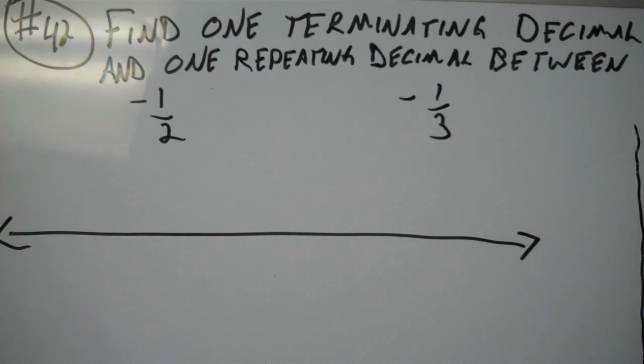I think the easiest way to go about doing this problem is to plot both of these numbers on a number line, and I'm going to convert them first into their decimal form.